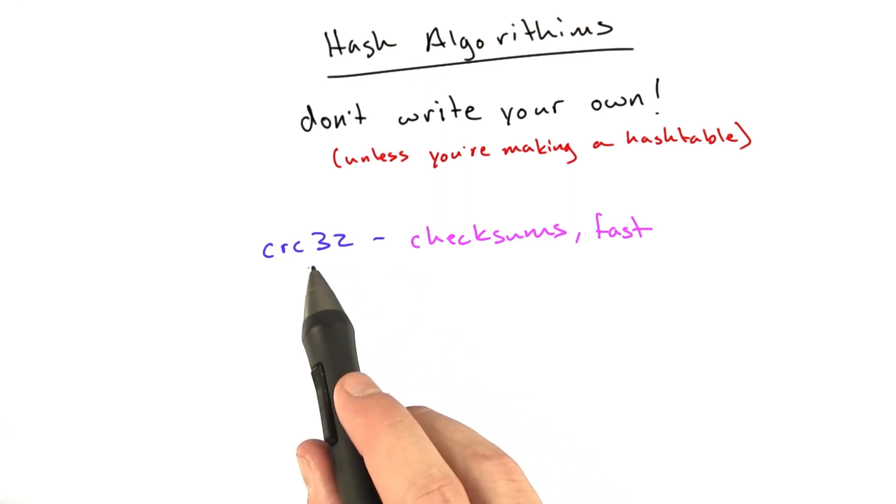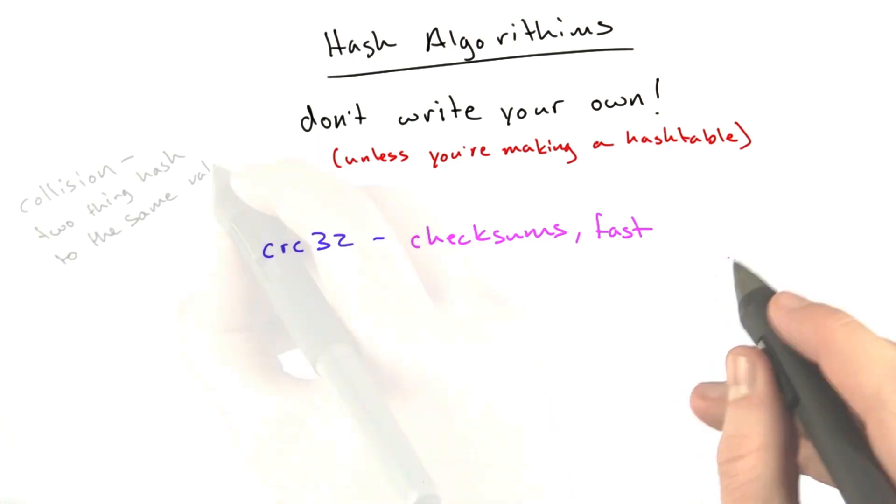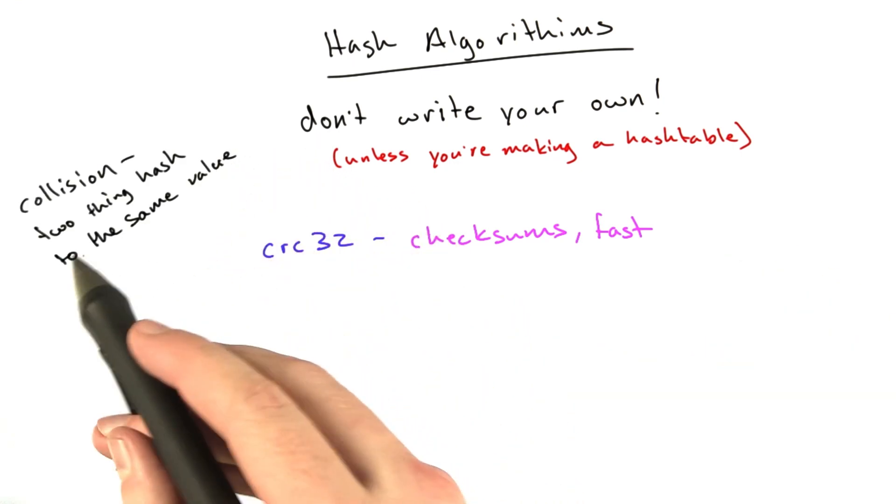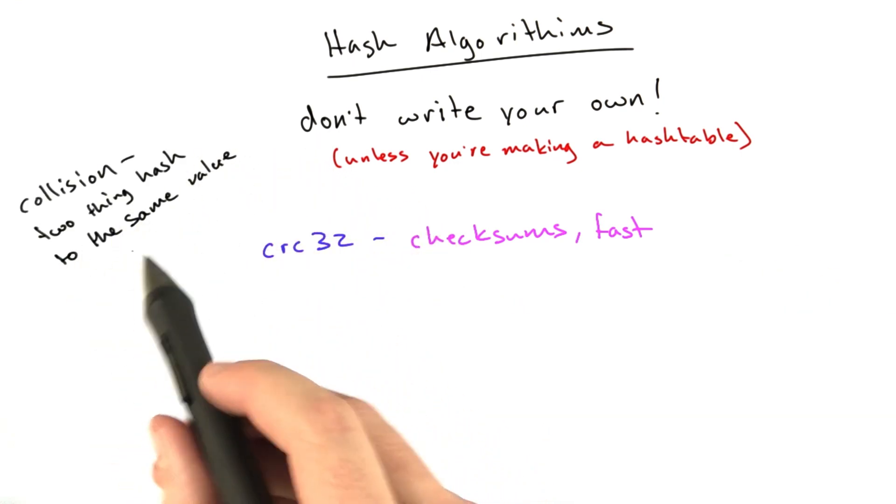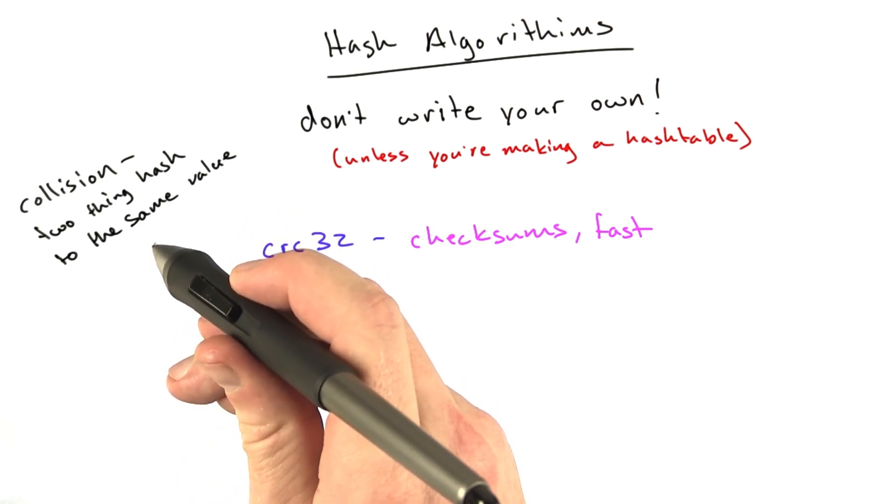It's very easy to find what we call a collision, which is when two things hash to the same value. The whole point of a hash is that we can get a different value for almost anything we're going to hash.